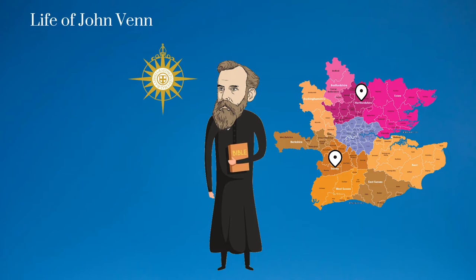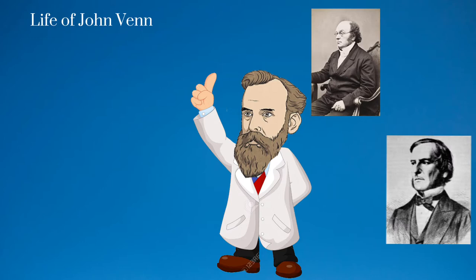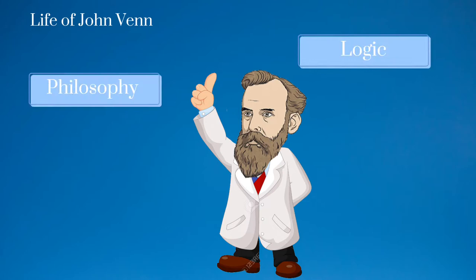He became a moral science lecturer under the influence of Augustus de Morgan, George Boole, and John Stuart Mill, where he developed an interest in logic, philosophy, and metaphysics. He also began extending Boole's mathematical logic, which led him to invent the eponymous Venn diagram.